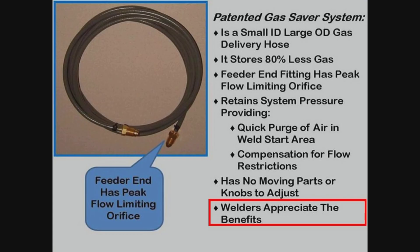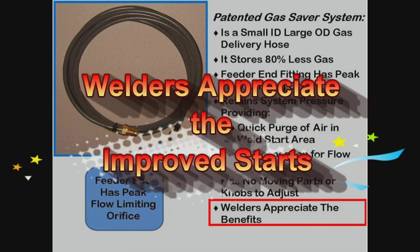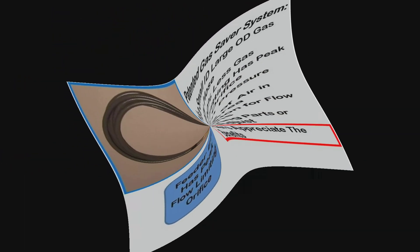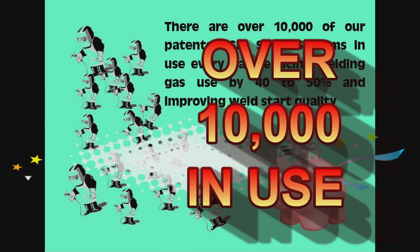In summary, the Gas Saver System employs a small-ID, large-OD custom extruded gas delivery hose to store over 80 percent less gas each time welding stops. There is a peak flow limiting orifice in the welder or wire feeder end, limiting turbulence. The system retains pressure to compensate for inevitable flow restrictions occurring when welding and also quickly supplies needed extra gas to purge the weld start area of moisture-laden air. It has no moving parts or knobs to adjust. Most importantly, welders appreciate the weld start benefits. There are well over 10,000 Gas Saver Systems in use, eliminating waste every day and reducing total welding gas used by typically 40 to 50 percent. As important for some users is the improvement in weld start quality.